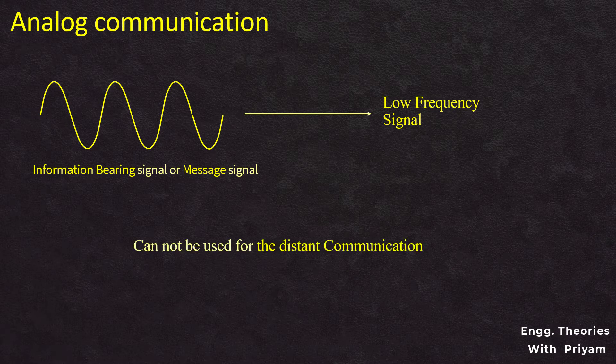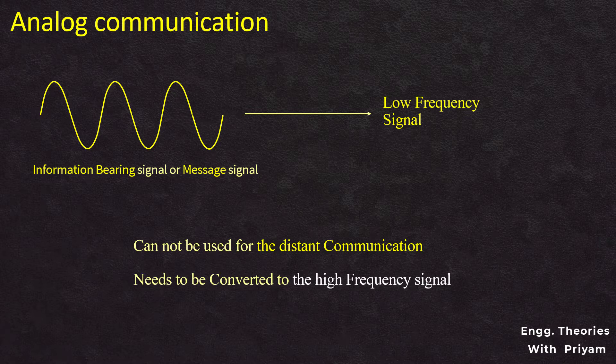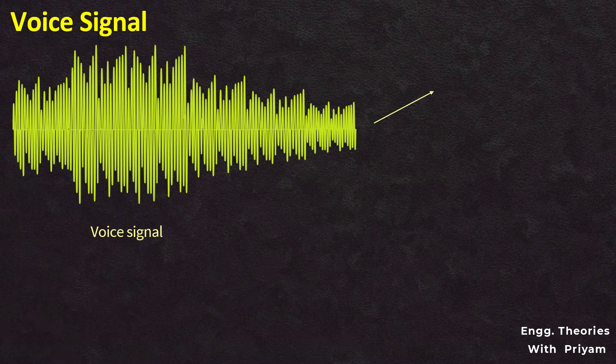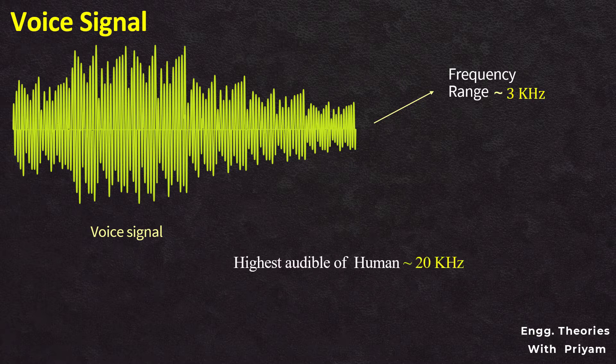Generally, the information-varying or message signal is a low-frequency signal, and low-frequency signals cannot be used for distant communication. This low-frequency signal needs to be converted to a high-frequency signal before transmission. For example, the frequency of a voice signal is nearly 3 kHz, and the highest frequency of a human voice is up to 20 kHz. With the help of a high-frequency carrier signal, we can easily transmit this low-frequency voice signal by imposing it onto the carrier — this process is known as modulation.